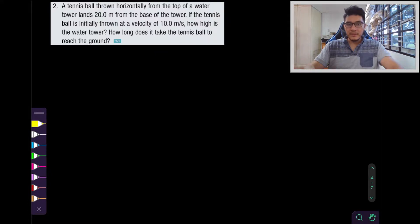This is question number two, but although it may seem easy at the beginning, I want you to try to focus on the steps because then we can try to take on more challenging questions afterwards. So let's get started with question number two: a tennis ball thrown horizontally from the top of a water tower lands 20 meters from the base of the tower. If the tennis ball is initially thrown at a velocity of 10 meters per second, how high is the water tower? How long does it take the tennis ball to reach the ground?